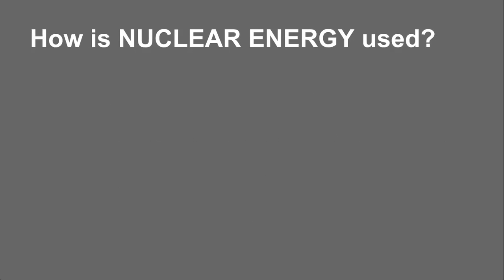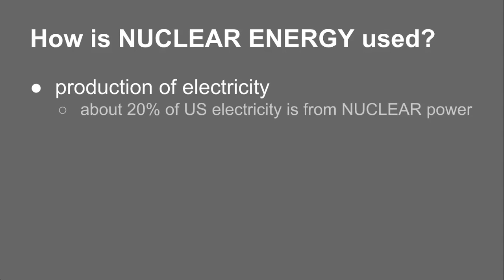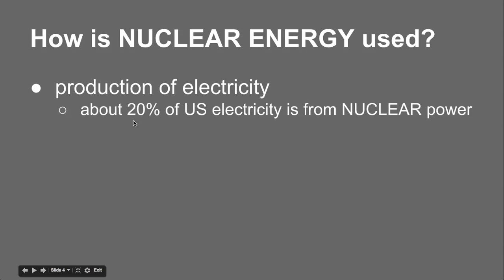Now why are we learning about it? How is nuclear energy used? Well, for one, it produces electricity. In America, about 20% of our electricity comes from nuclear power. There are countries — France being one of them — where the majority of their electricity comes from nuclear energy. The US only uses about 20%, but we're making strides to actually use more nuclear power.